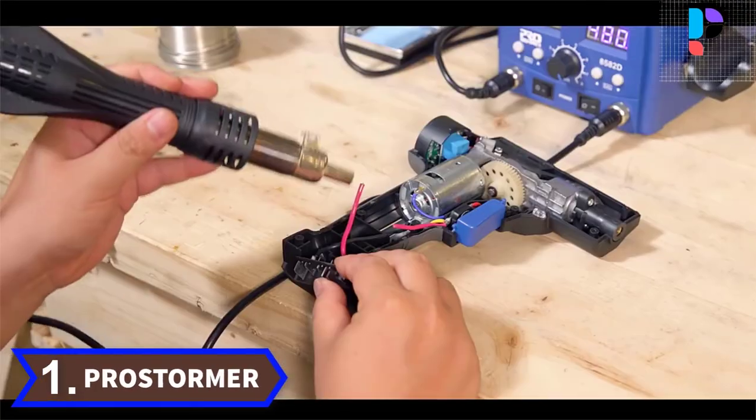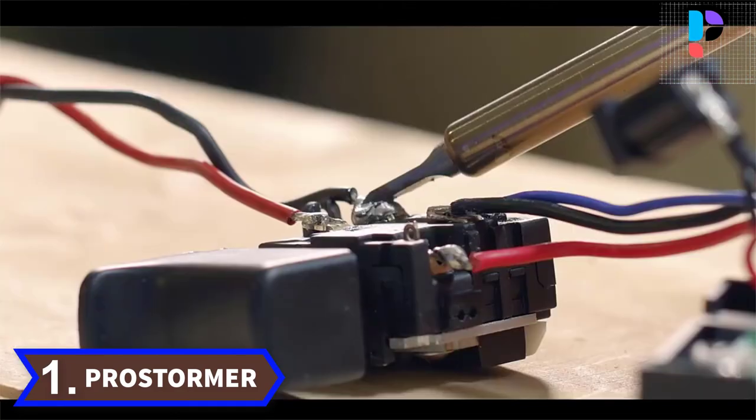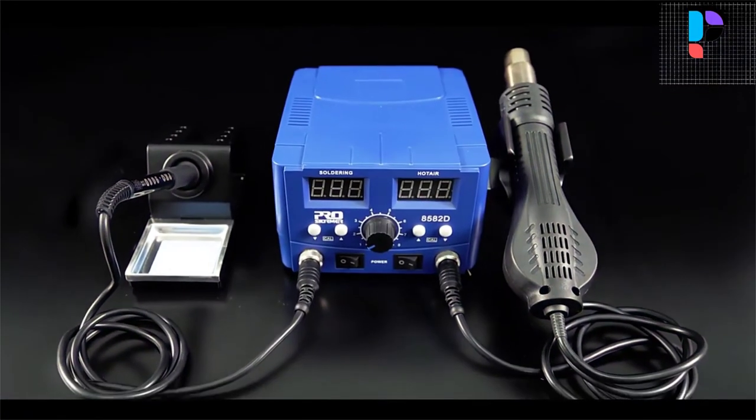Number 1. Brand name: Pristormer. Model number: 8582D.